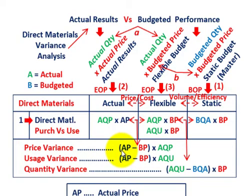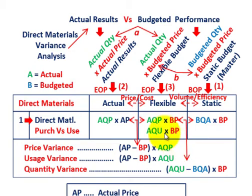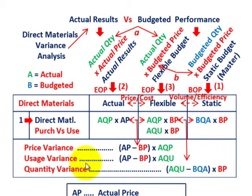For the usage variance, the common factor is actual quantity used. So the usage variance is (actual price minus budgeted price) times actual quantity used. For the quantity variance — the difference between flexible and static amounts — the common factor is budgeted price. So the quantity variance equals (actual quantity used minus budgeted quantity allowed) times budgeted price.